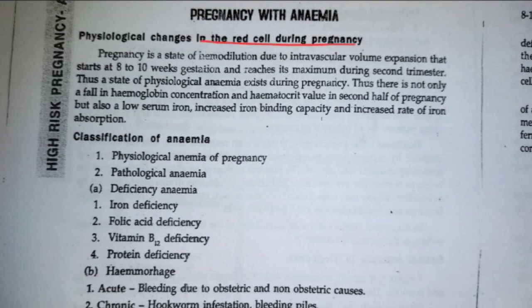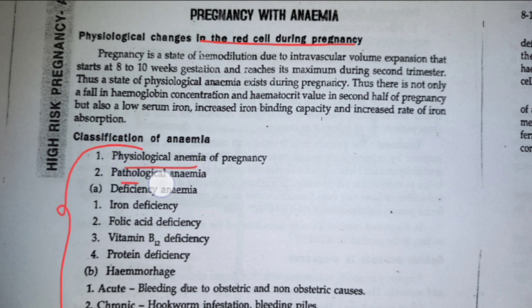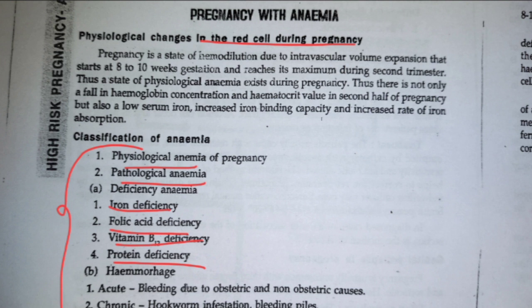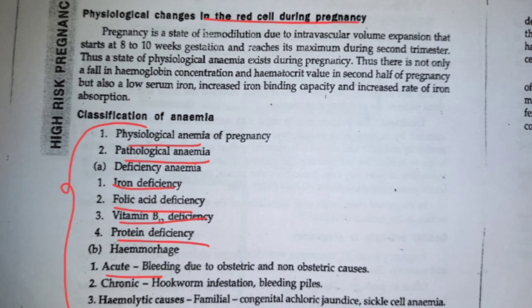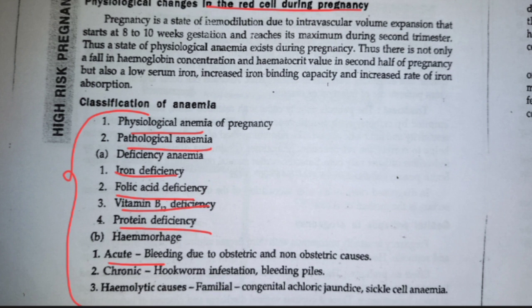Pregnancy with anemia: during pregnancy the woman sends blood to the baby, so more blood than normal must be produced. In some women blood production is insufficient, leading to anemia. Classification: physiological or pathological, or due to deficiencies such as iron deficiency anemia, folate deficiency, vitamin B12 deficiency, or protein deficiency. Based on bleeding: acute anemia (little blood loss) or chronic anemia (large blood loss from accident or injury).